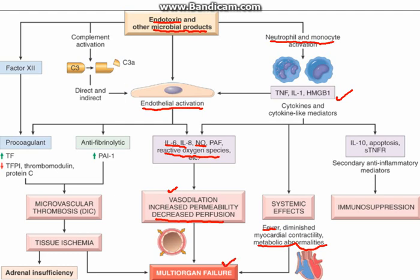All this leads to multi-organ failure. There is also activation of the complement system, which also activates the endothelium. There is activation of factor 12, also known as Hageman factor, which increases the coagulation cascade. It is pro-coagulant and anti-fibrinolytic in nature, which leads to thrombus formation. The thrombus formation is so extensive that it leads to a condition known as DIC — disseminated intravascular coagulation. In DIC, thrombus formation occurs so widespread in blood vessels that it consumes the platelets and leads to bleeding diathesis.